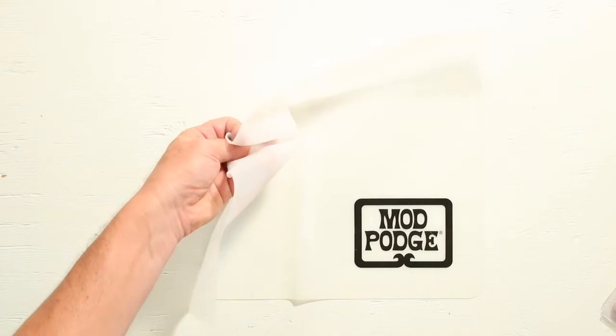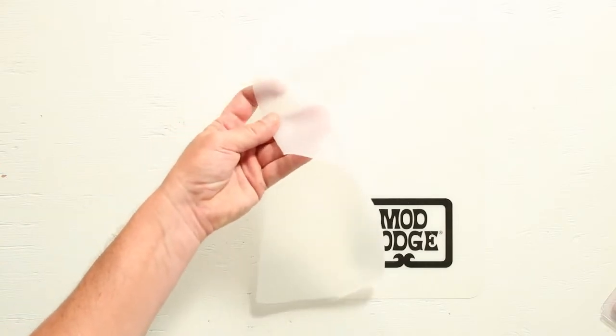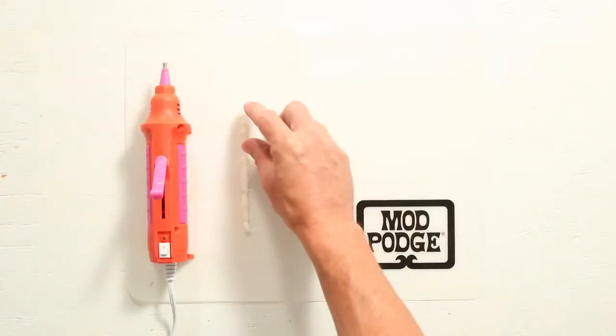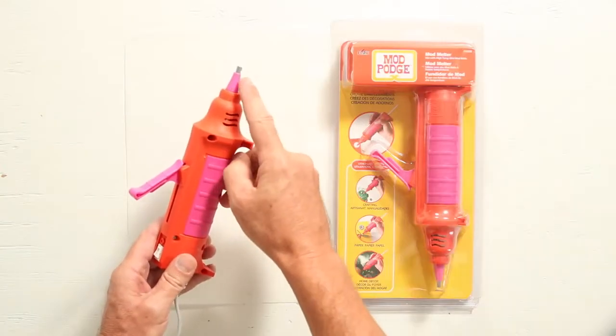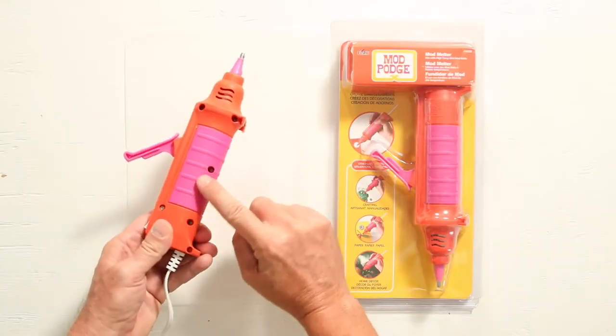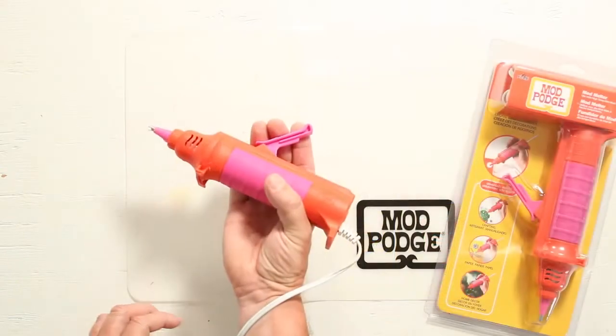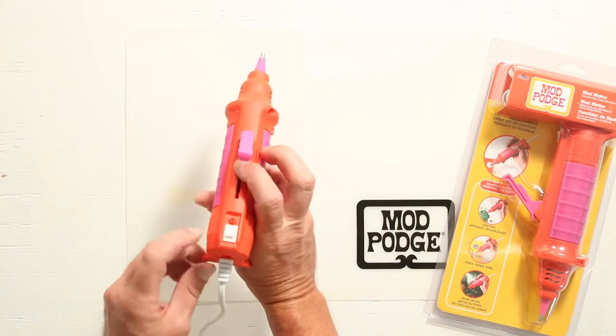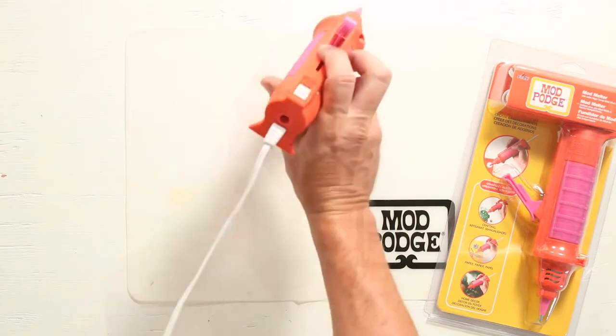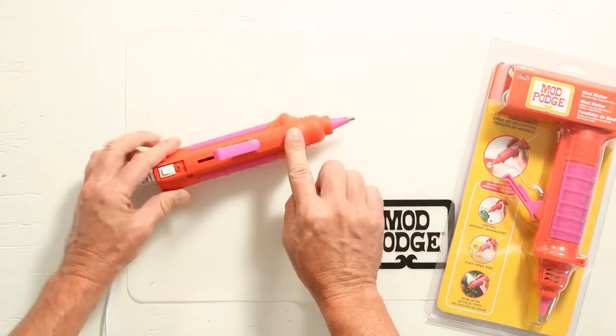The silicone craft mat protects your work surface. It's non-stick, washable and 600 degrees heat resistant. Cooled glues and melts peel right up. It's a landing pad for all your high temp tools. The Mod Melter has a silicone tip and handle. It has an easy trigger and an on-off switch. The cord is 6 foot long and it has a built-in stand.